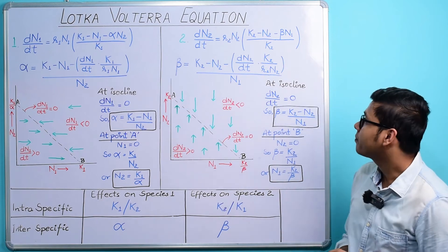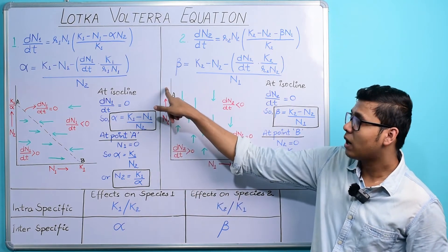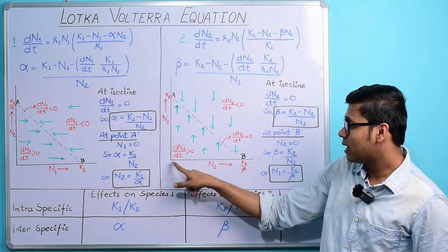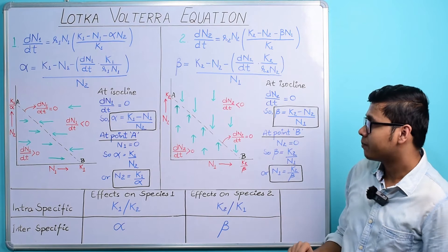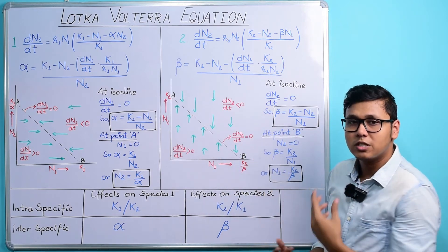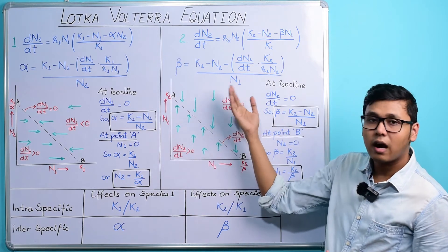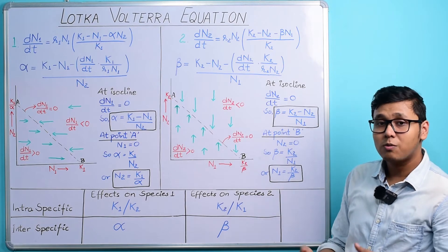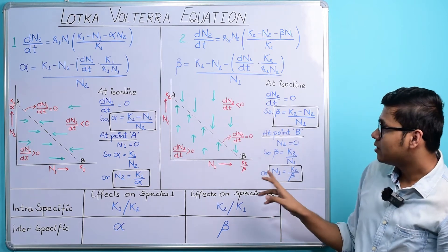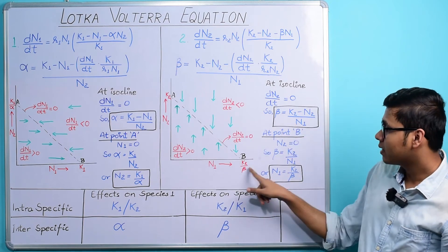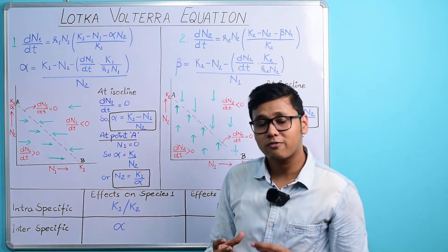Looking at the other side of the board — everything is similar for species 2. If N₁ = 0, then N₂ can grow up to its full carrying capacity K₂. But as N₁ starts increasing, the maximum capacity of N₂ to grow starts reducing. At the isocline, dN₂/dt = 0; before the isocline, dN₂/dt > 0 so the population grows; after the isocline, dN₂/dt < 0 so the population decreases until it reaches the isocline. The maximum value of N₁ on this isocline is K₂/beta.